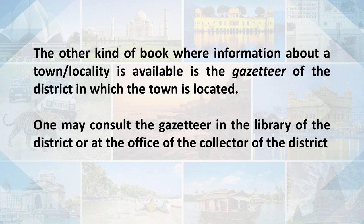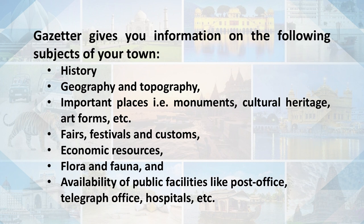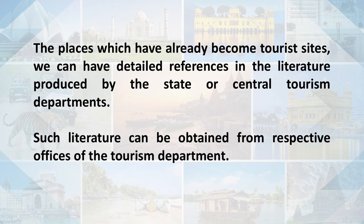Another important source is the gazetteer of the district in which the town is located. You may consult the gazetteer in the library of the district or at the office of the collector. The district gazetteer gives information on history, geography and topography, important places such as monuments, cultural heritage, art forms, fairs, festivals and customs, economic resources, flora and fauna, and availability of public facilities like post offices, telegraph offices, and hospitals. For places that have already become tourist sites, detailed references exist in literature produced by state or central tourism departments.